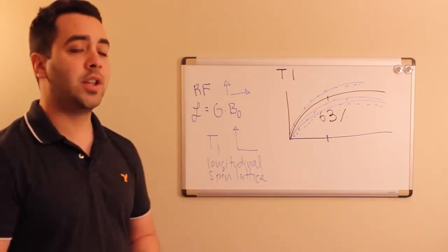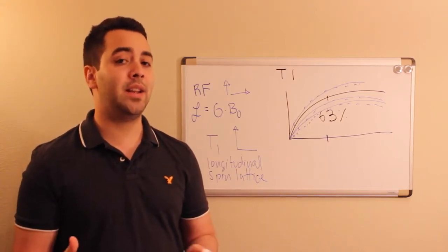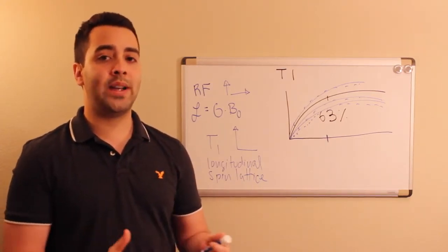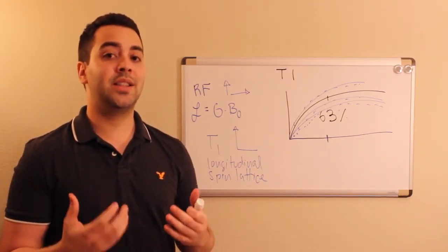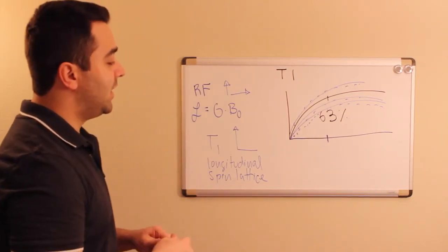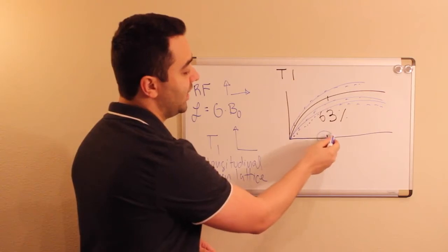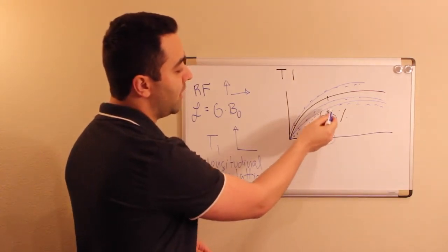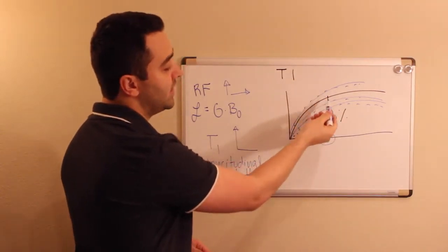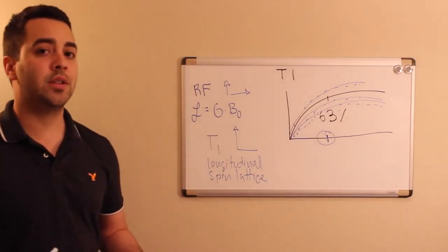So the correct name for T1 is T1 weighted images because we really weight the image towards a T1. So let's say I'm going to image now in a T1 weighted image. I select this interval here which corresponds to an area near the vicinity of the T1 of different tissues.